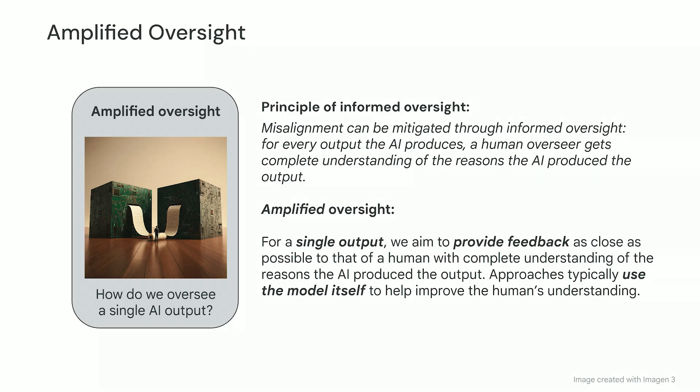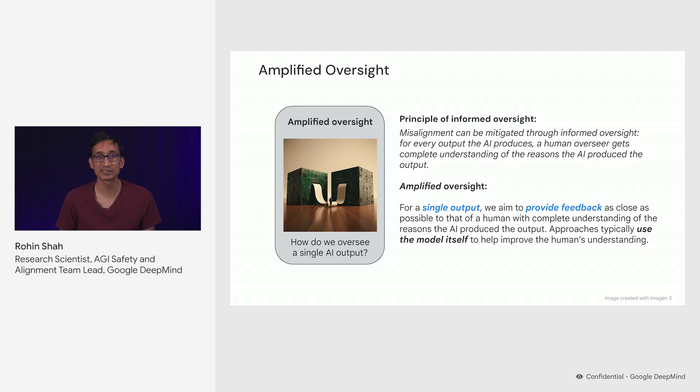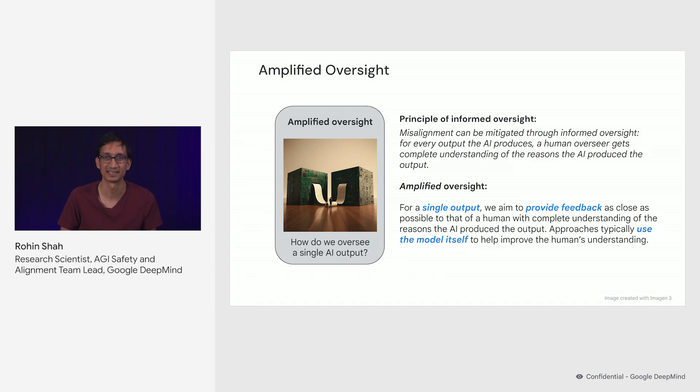The basic intuition here is that we want to carve off a simpler problem than full informed oversight, and specifically we're going to allow ourselves to use expensive techniques that are only feasible for overseeing a small number of outputs. This gives us a definition as follows: for a single output, we aim to provide feedback as close as possible to that of a human with complete understanding of the reasons that the AI produced that output. Approaches to Amplified Oversight typically use the model itself to help improve the human's understanding — that is, the model is amplifying the human's oversight, hence the name.